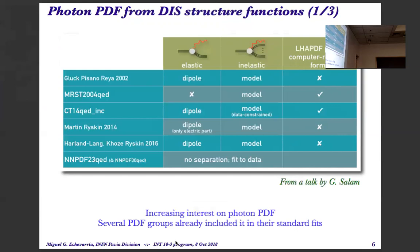Another thing I commented on was the Photon PDF. The photon inside the proton has been there for a few years since the first work by Christian and company. The Photon PDF has already appeared in several fits by different groups, with different assumptions or models — dividing the Photon PDF into elastic and inelastic, or whatever — but this has been going on lately. So there is an increasing interest in the Photon PDF.